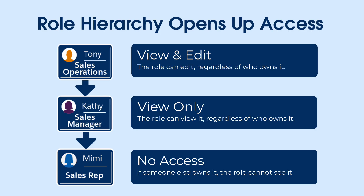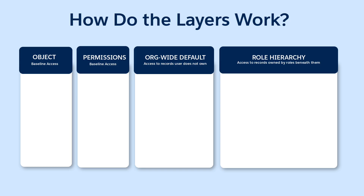And we're done. We've set up the role hierarchy and granted the proper record access. Let's see these settings in action with Alan Wong, one of our employees in Sales Ops. If Alan has Create, Read, Edit, and Delete permissions on the Opportunity object, and the org-wide defaults are set to private on Opportunities, then we can grant him any of the three options for Opportunity Access.